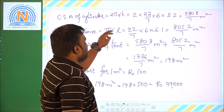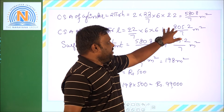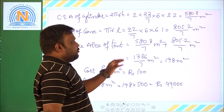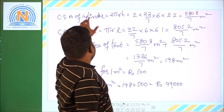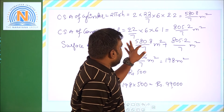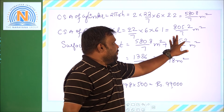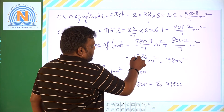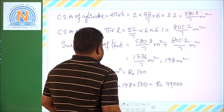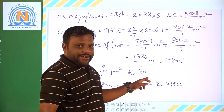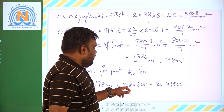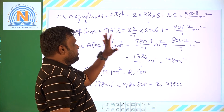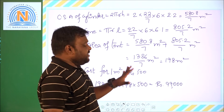CSA of cone = π × 6 × 6.1 = 805.2/7 square meters. Surface area of the tent = 580.8/7 + 805.2/7 = 1386/7 = 198 square meters. Cost for 1 square meter is ₹500, so cost for 198 square meters = 198 × 500 = ₹99,000. This is the complete cost of canvas for the tent.